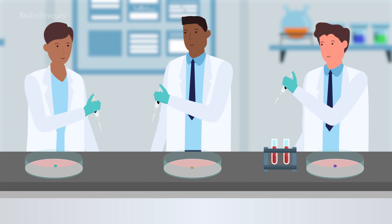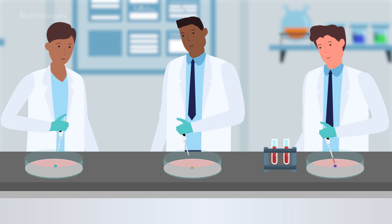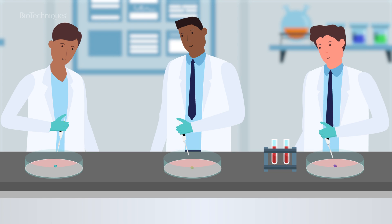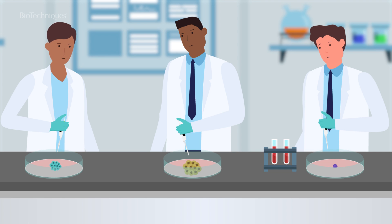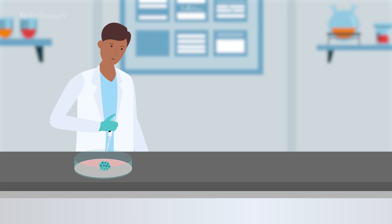One common challenge is pipetting. Pipetting technique can vary between people and research groups, and poor pipetting technique may lead to low reproducibility of samples and experiments. For example, poor cell seeding or pipetting of embedded organoids can result in differential growth rates. Difficulties are also faced when pipetting and mixing sensitive cells such as neurons, viscous extracellular matrices, or hydrogels.